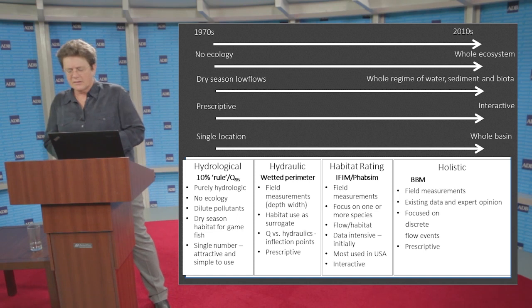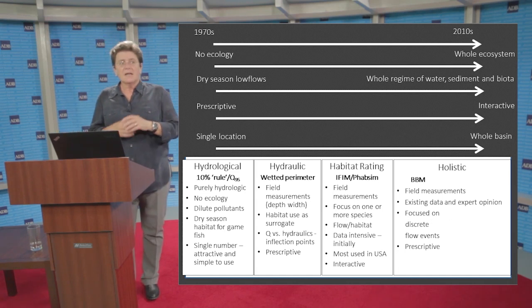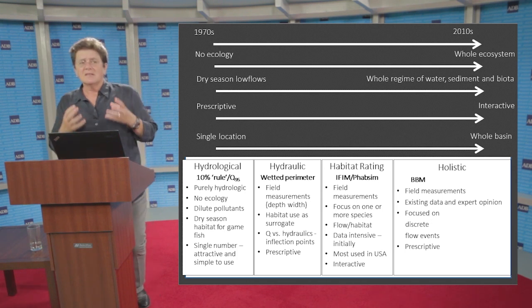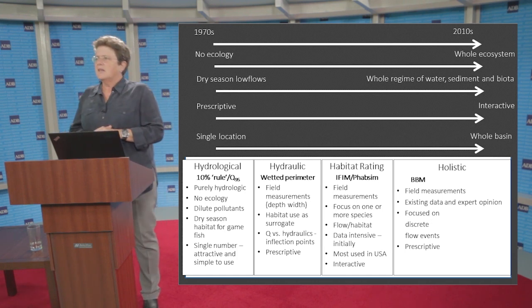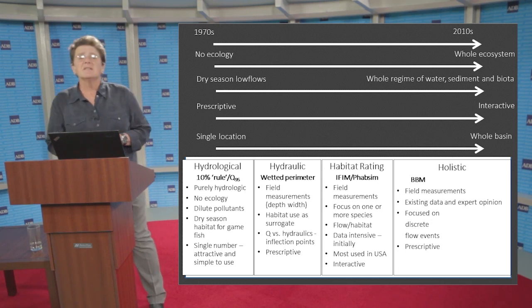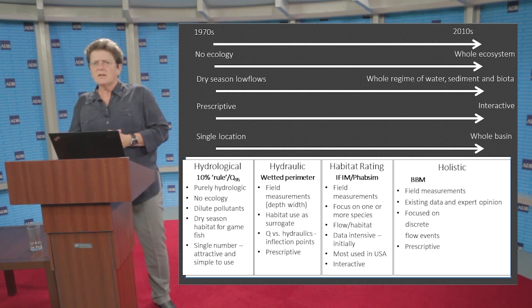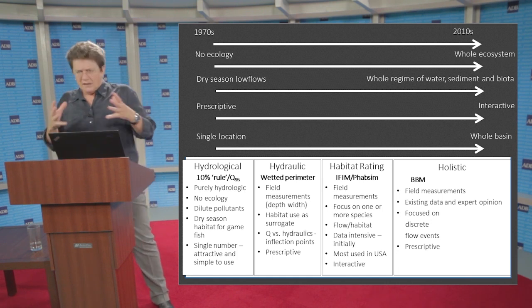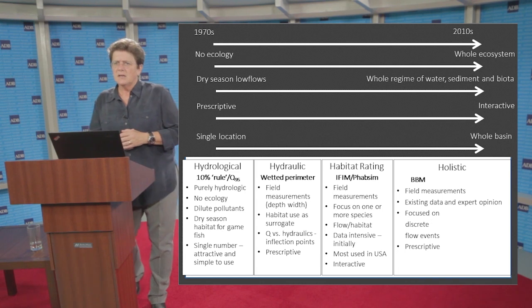The last category from the Tharme paper is holistic methods. The first kind is the Building Block Methodology, or BBM. It has field measurements but relies largely on existing data and expert opinion — because the detailed information available for rivers in the United States is not necessarily available for rivers in many other parts of the world. The BBM focuses on discrete flow events, identifying floods and low flows needed to protect the ecosystem, and it is prescriptive: if you want to keep your river in a particular state, these are the flows you need.